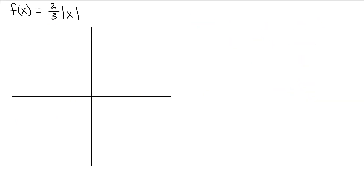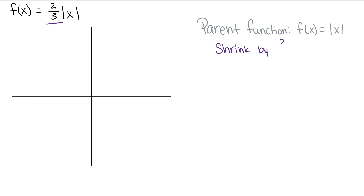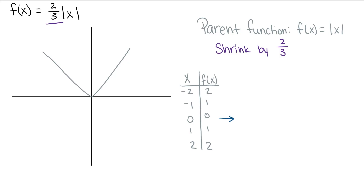Last, we have f(x) = (2/3)|x|. Our parent function is the absolute value of x. That two-thirds in front means we're going to shrink our parent function by a factor of 2/3. Because it is between 0 and 1, it's going to shrink our function. Let's compare our table of values — this is what our transformed function looks like.